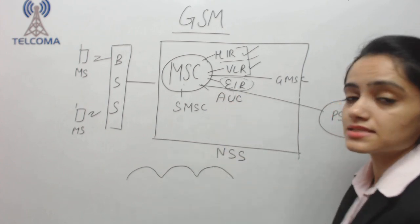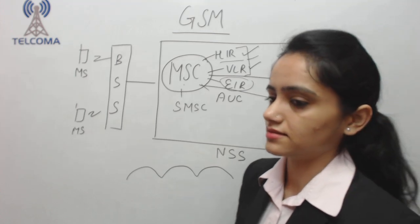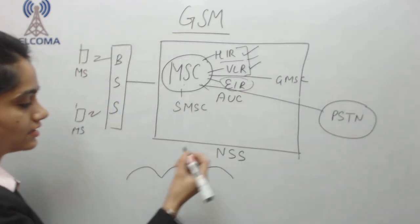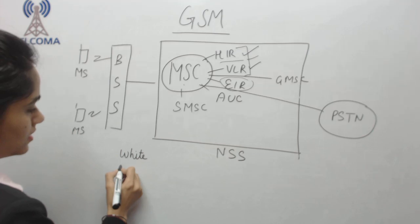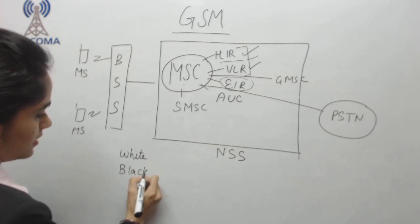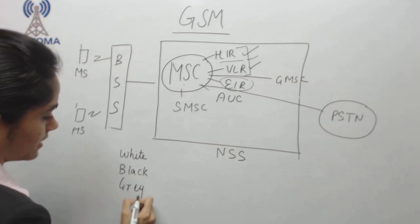Now let's move to the EIR. EIR is equipment identity register. Accordingly, we have in EIR, we have three lists: white, black, and gray.